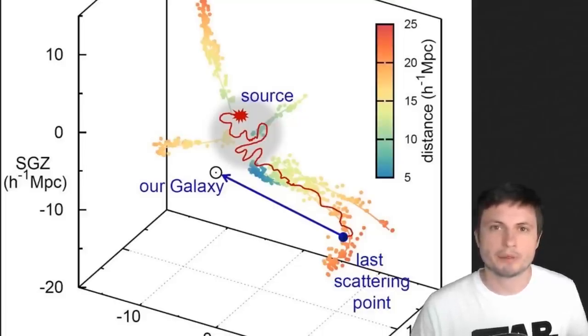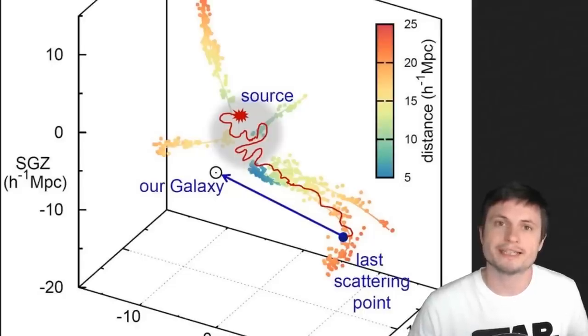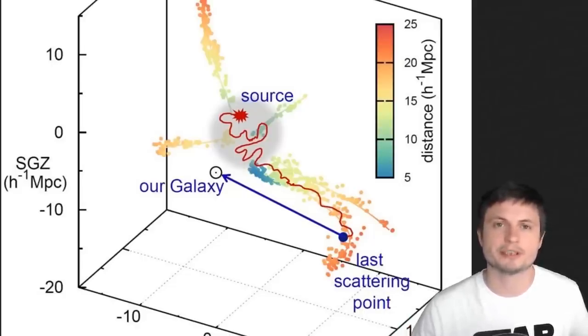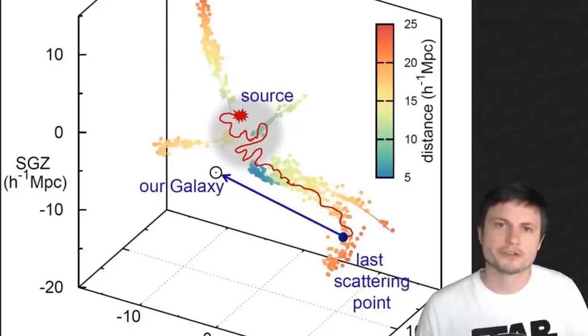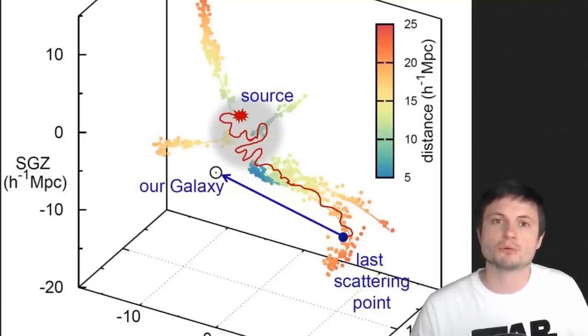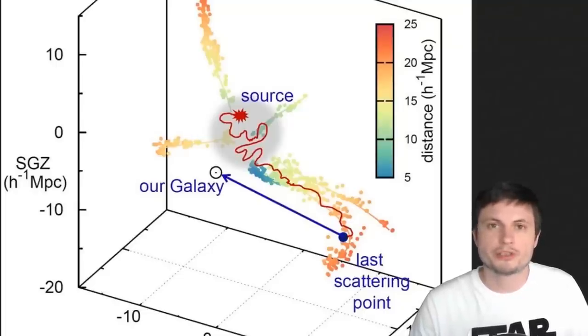The main idea: the ultra-high-energy cosmic rays travel across the universe changing direction many times, traveling through these filaments until something scatters them back toward our galaxy, then they cross planet Earth. The scientists believe what we're detecting are particles scattered by various events in these filaments — the interaction between ultra-high-energy particles and something inside those filaments that caused them to change direction. All of them probably came from objects like M87 with its ridiculously powerful black hole.